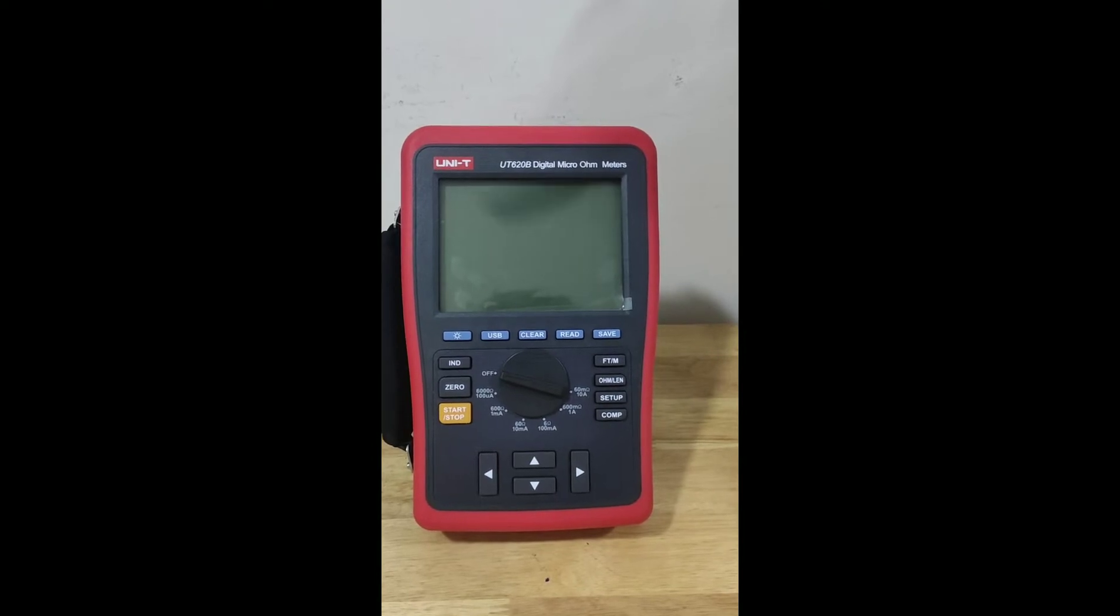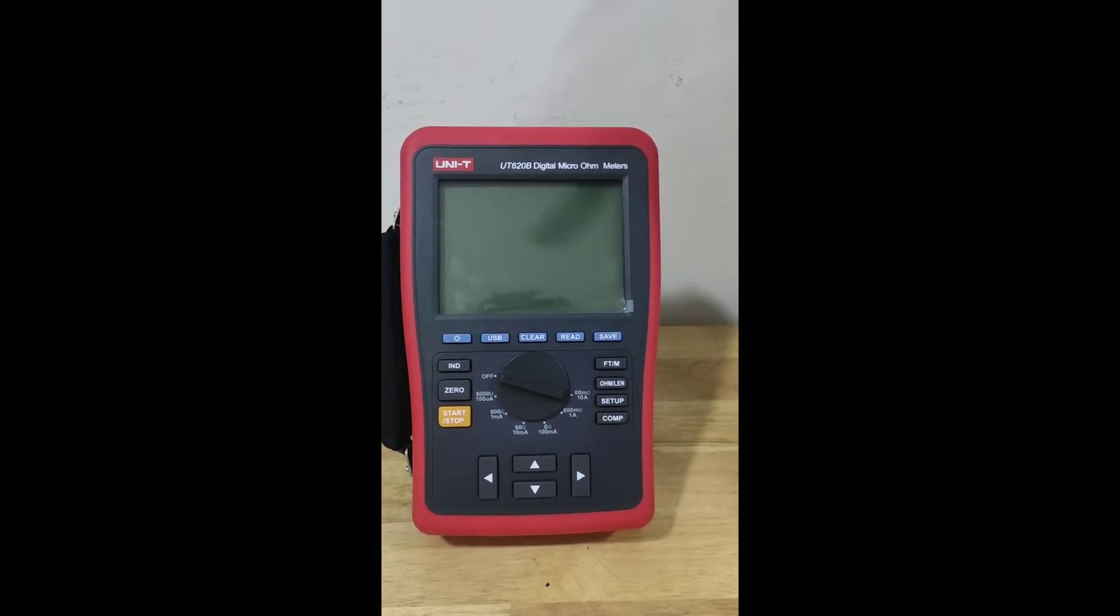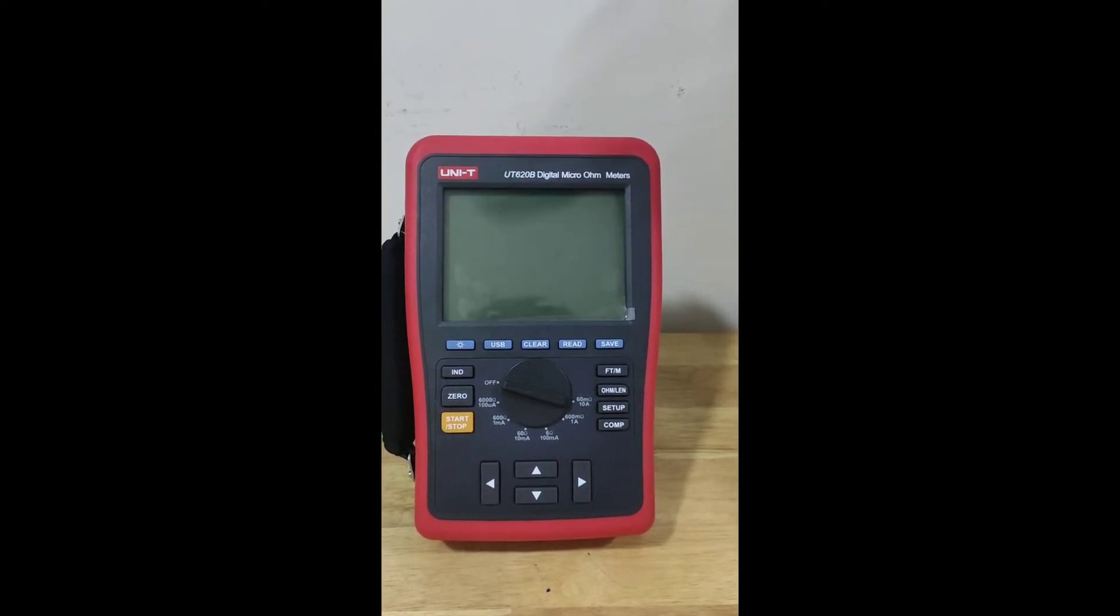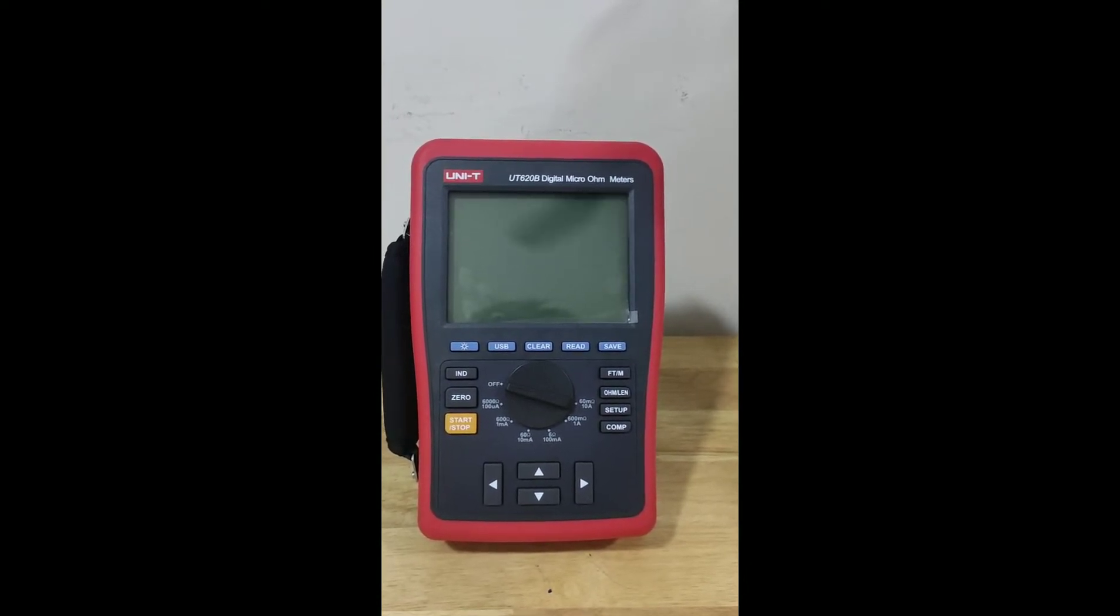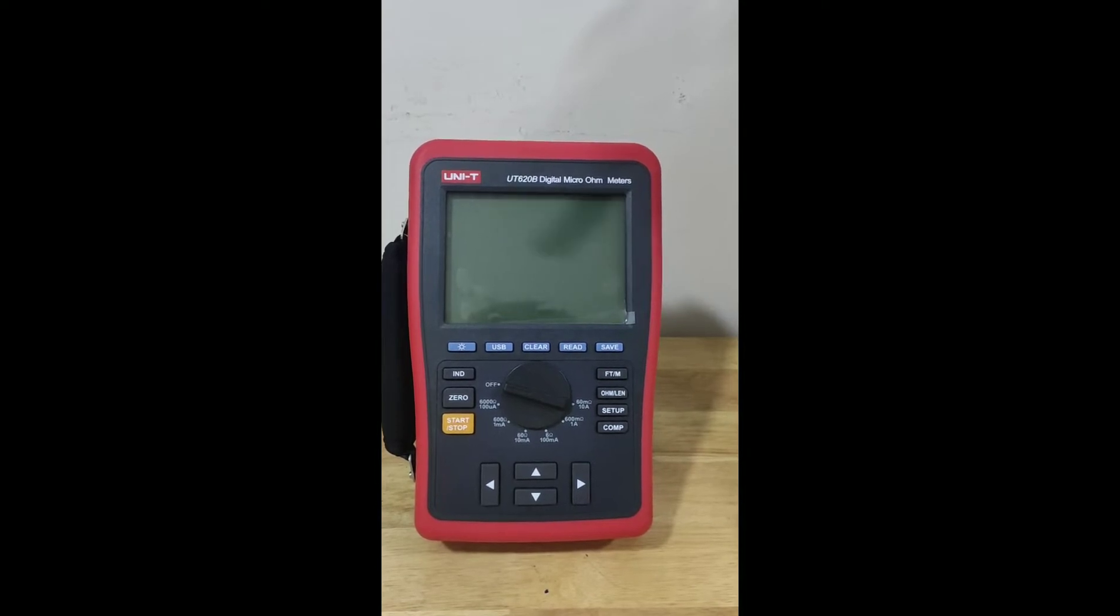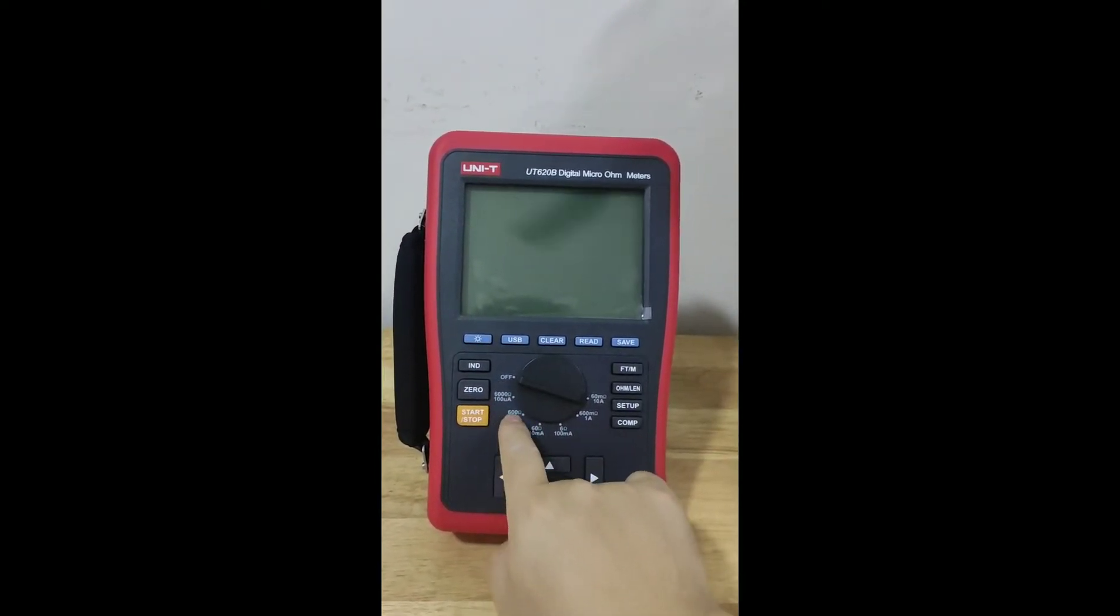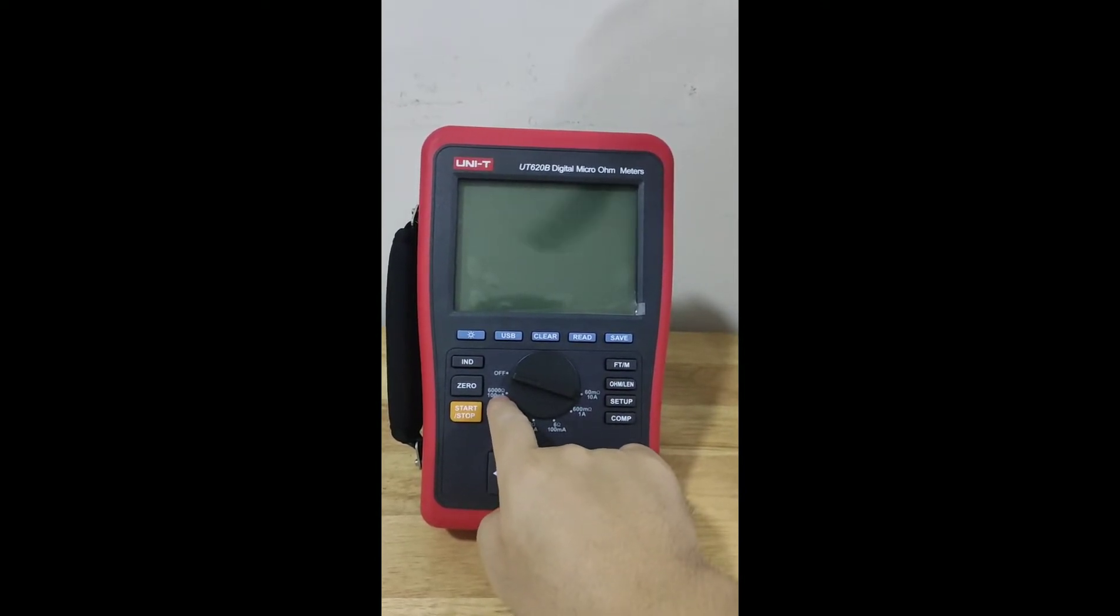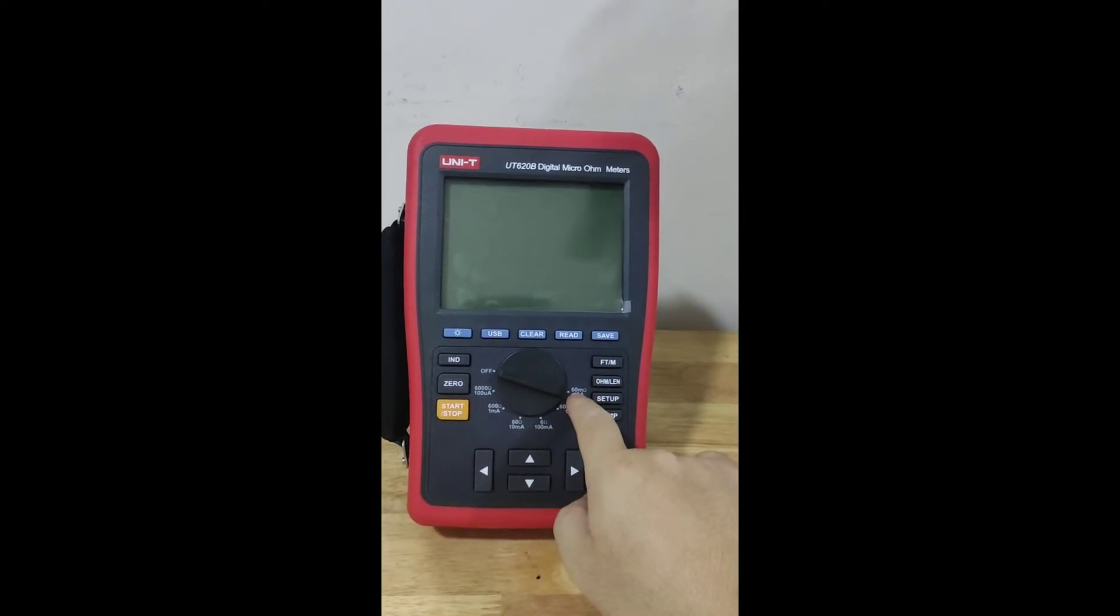As you can see there are many buttons. And also a wheel in the middle. We can twist this wheel to the desired ohm range. The resistance range. Let's turn it on and have a look what it look like. This is off and here are the resistance range from 6000 ohm until 60 milli ohm.